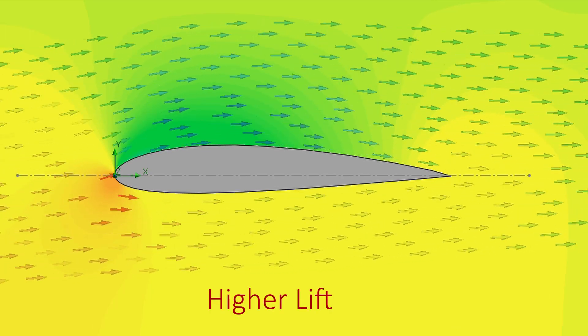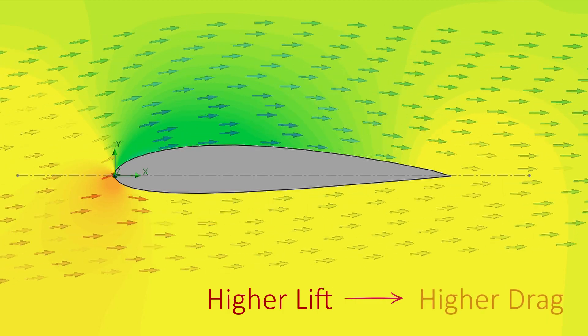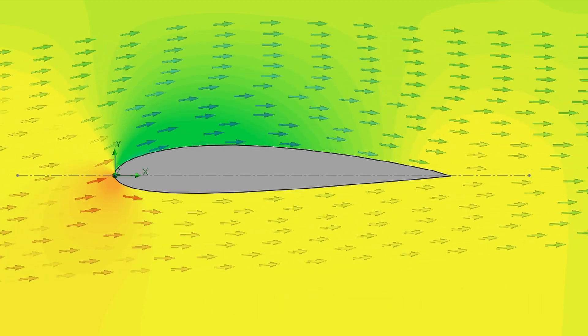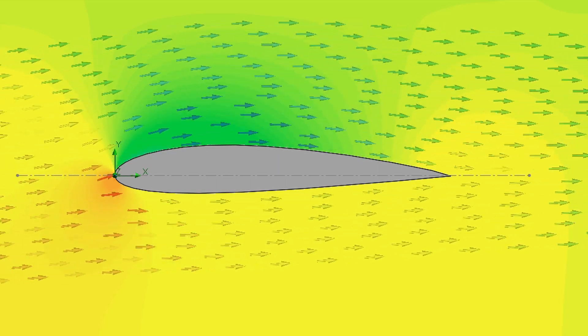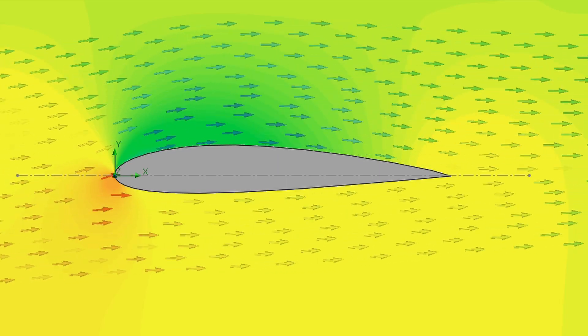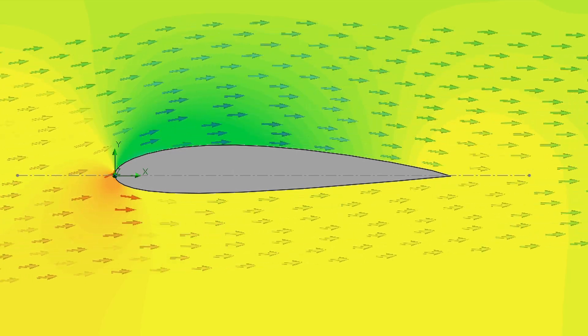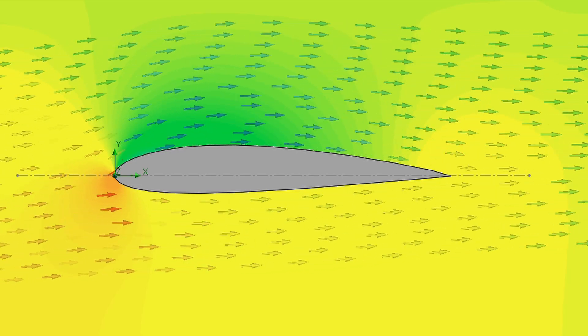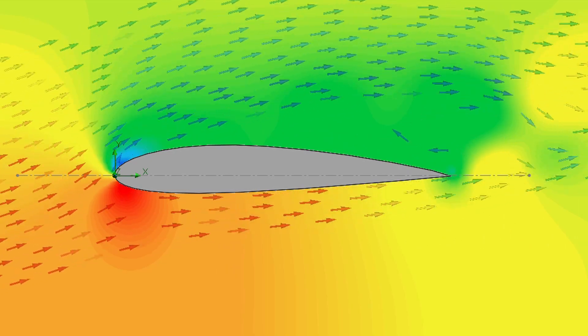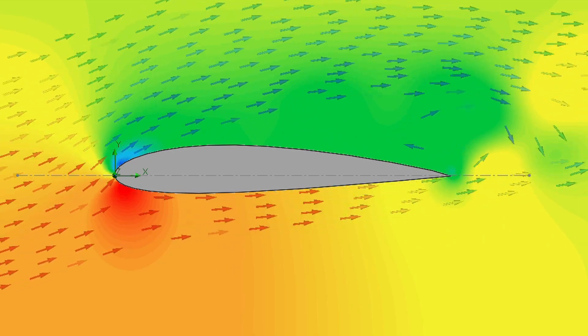The disadvantage is that it will also produce higher drag. There is a limit on how much we can increase the angle of attack, because over a certain limit, typically 12 degrees, there is a phenomena called stall. The stall occurs when the air flow separates from the surface of the wing, resulting in less lift and higher drag.